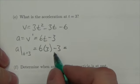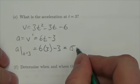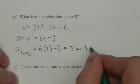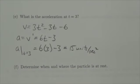6 times 3 is 18, minus 3 will be 15. This will be 15 units per second squared. Don't know what the units for length are.